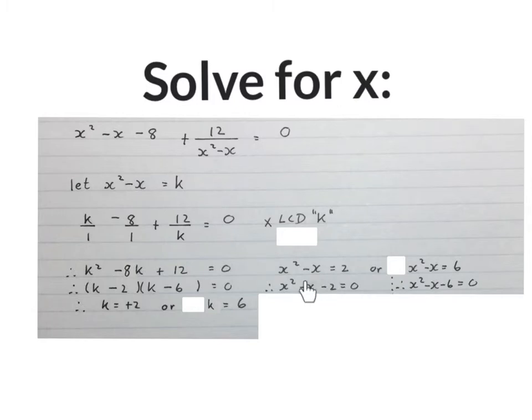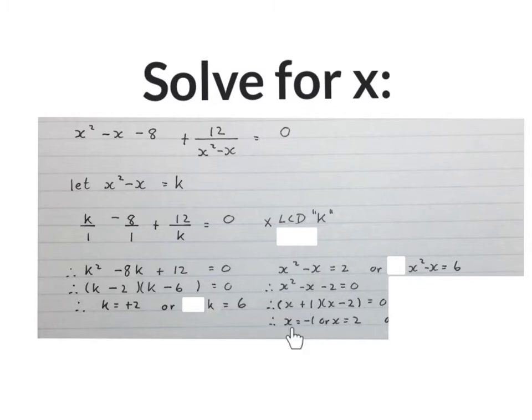Bring everything to one side and equate it to 0. Let's just hide this one for a minute. So we go factorize this quadratic equation, and we get two answers, x equals to minus 1, or x equals to 2.